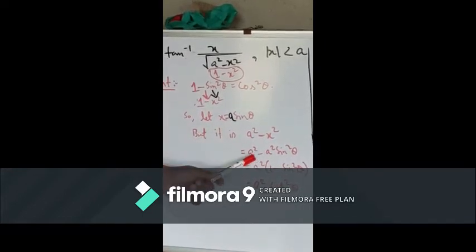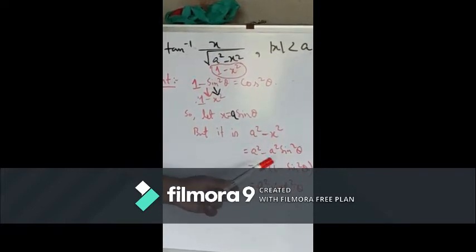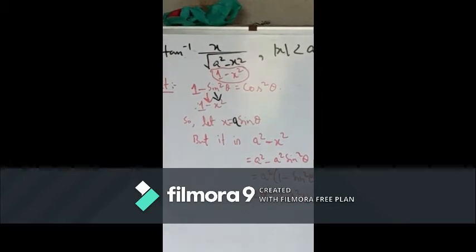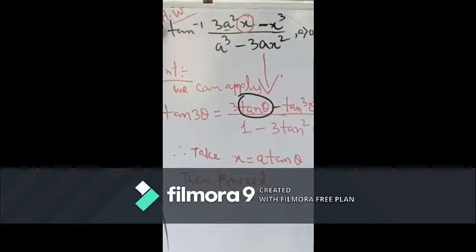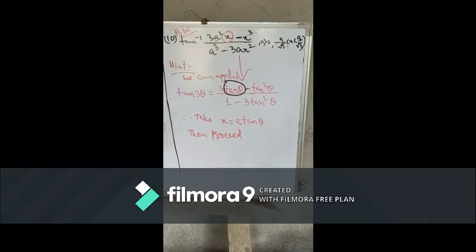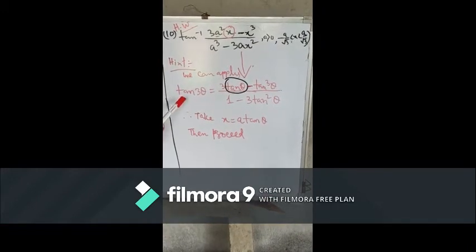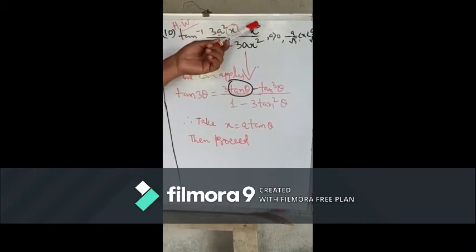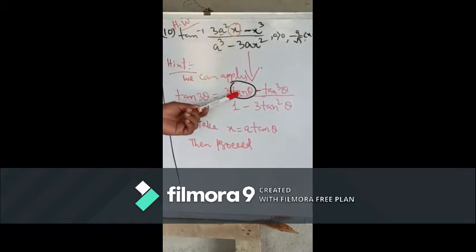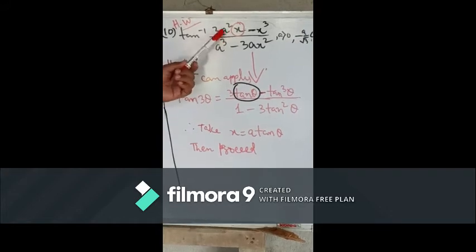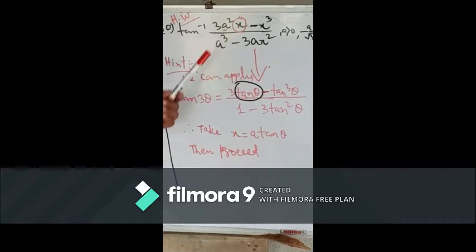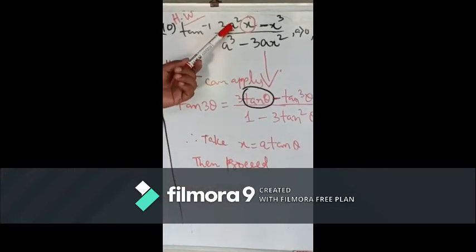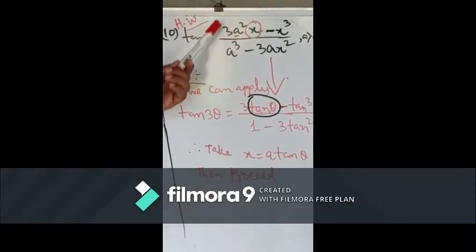But it is not 1 minus x squared, it is a squared minus x squared. So what we have to do: we have to suppose x equal to a sin theta, not just sin theta. If it is 1, then only x equals sin theta; if it is a, then a sin theta; if it is b, then b sin theta. So we can write a squared minus x squared equals a squared minus a squared sin squared theta, and taking a squared common gives 1 minus sin squared theta, which is cos squared theta. Put this in and you will get the desired result.